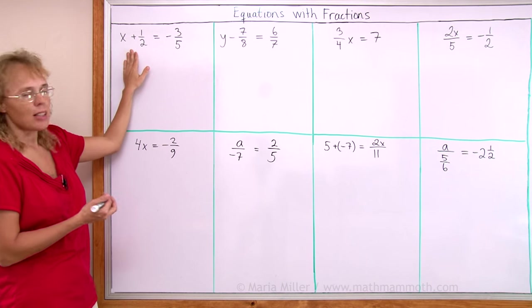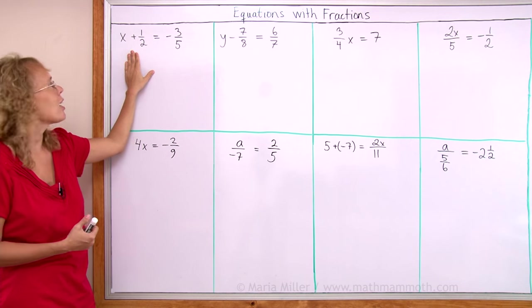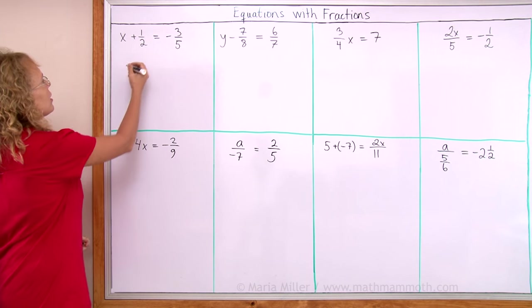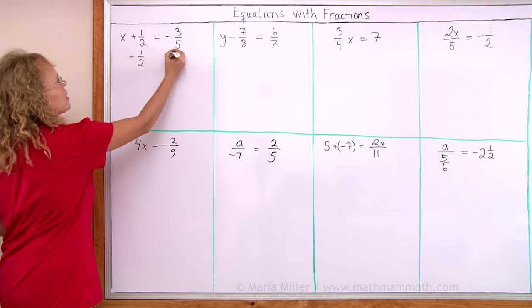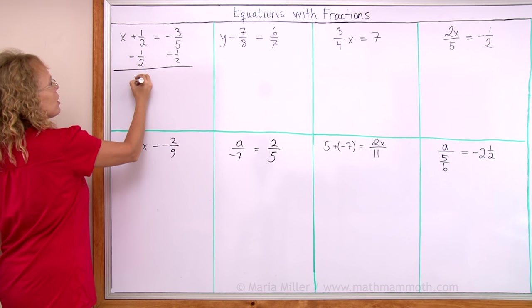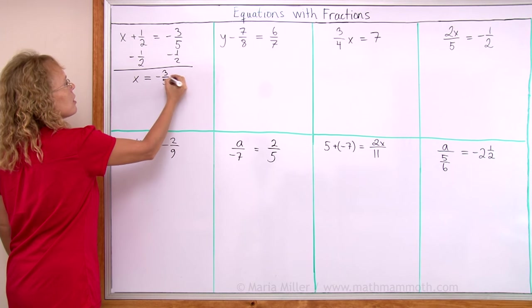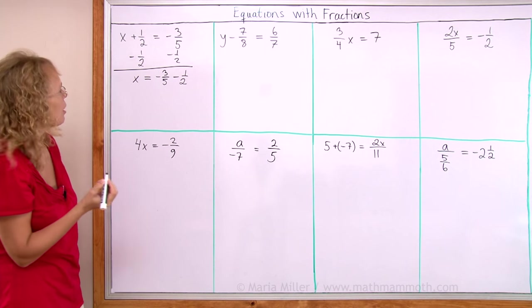Since one half is added to the variable we need to subtract one half from both sides to solve this. So I will subtract one half from both sides and then we get x alone here which is what we want.